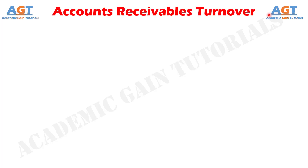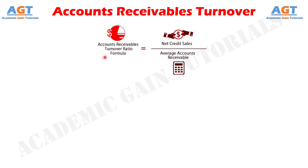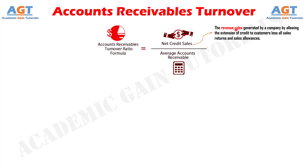The formula for calculating accounts receivables turnover is as follows. Accounts receivables turnover ratio equals net credit sales divided by average accounts receivable. Here, net credit sales are the revenue sales generated by a company by allowing the extension of credit to customers, less all sales returns and sales allowances. It does not include any sales where the payment is made in cash immediately by the customers. Average accounts receivable is the average balance of the accounts receivable during any specific period of time.